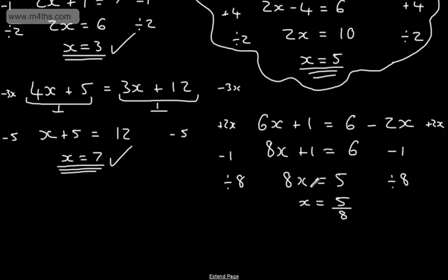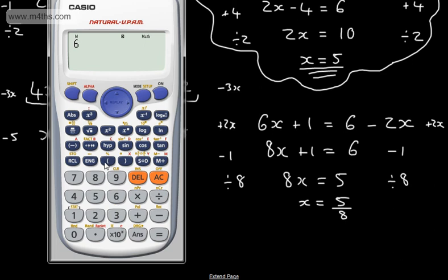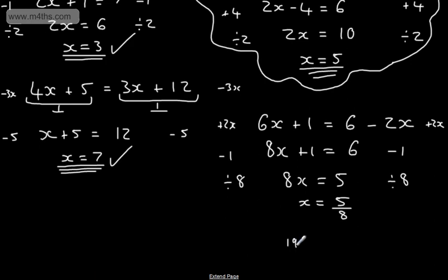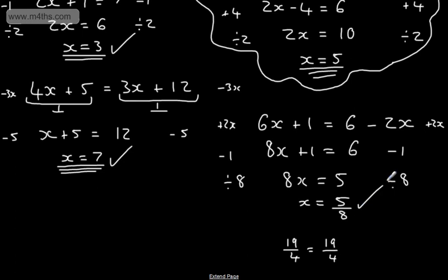We can check by substituting back in. If we put in 5/8: 6 lots of 5 over 8, then add 1, that gives us 19 over 4. Substituting into the other side, 6 minus 2 lots of 5 over 8 should give exactly the same — 19 over 4. So we can see that it works. Remember, the equation must balance.